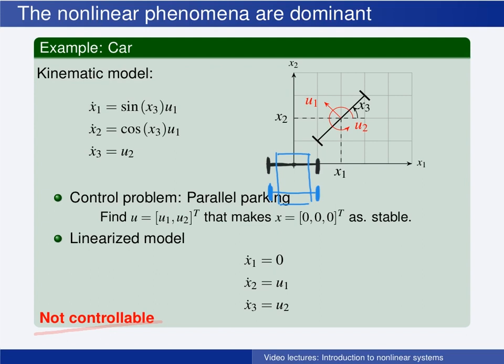So the model is not controllable. And of course, we all know that the car is controllable. So this is a case where a linear model does not properly describe the real system. We need to use a non-linear model in analysis, and this shows that the car is indeed controllable.